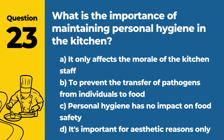Question 23. What is the importance of maintaining personal hygiene in the kitchen? Answer: B. To prevent the transfer of pathogens from individuals to food. Good personal hygiene practices among kitchen staff are crucial to preventing foodborne illnesses.